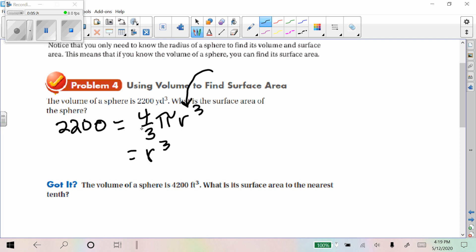get rid of this 4 thirds. We'll do that by multiplying by the reciprocal. Take care of that. And then to get rid of the pi, we're going to have to take that answer, 3 fourths of 2200, which equals 1650. And we're going to need to divide that by pi. And then to find r, we're going to have to do the cube root of that.